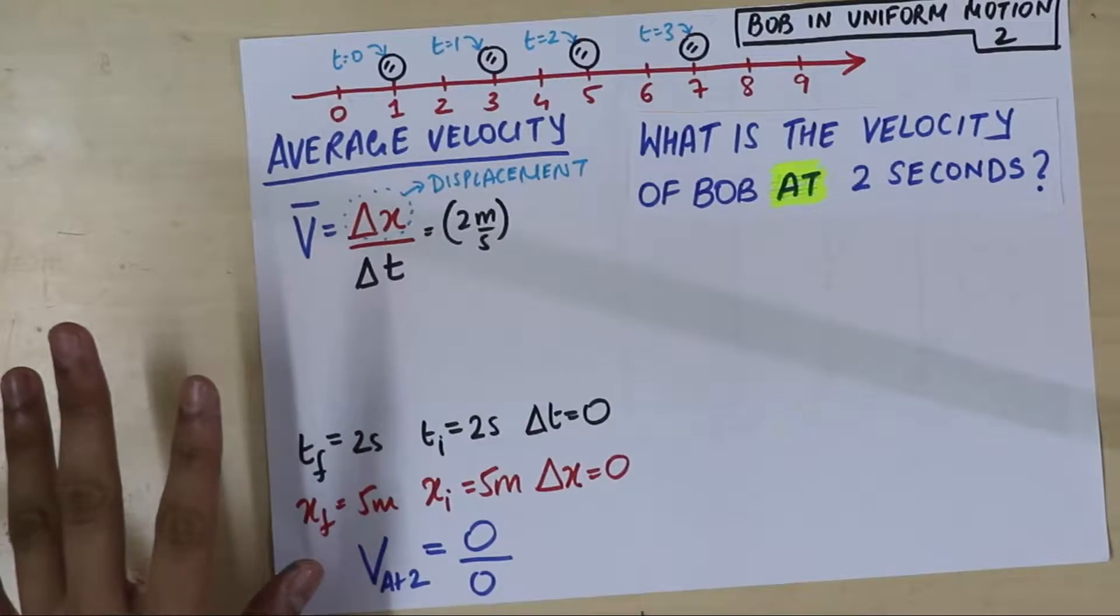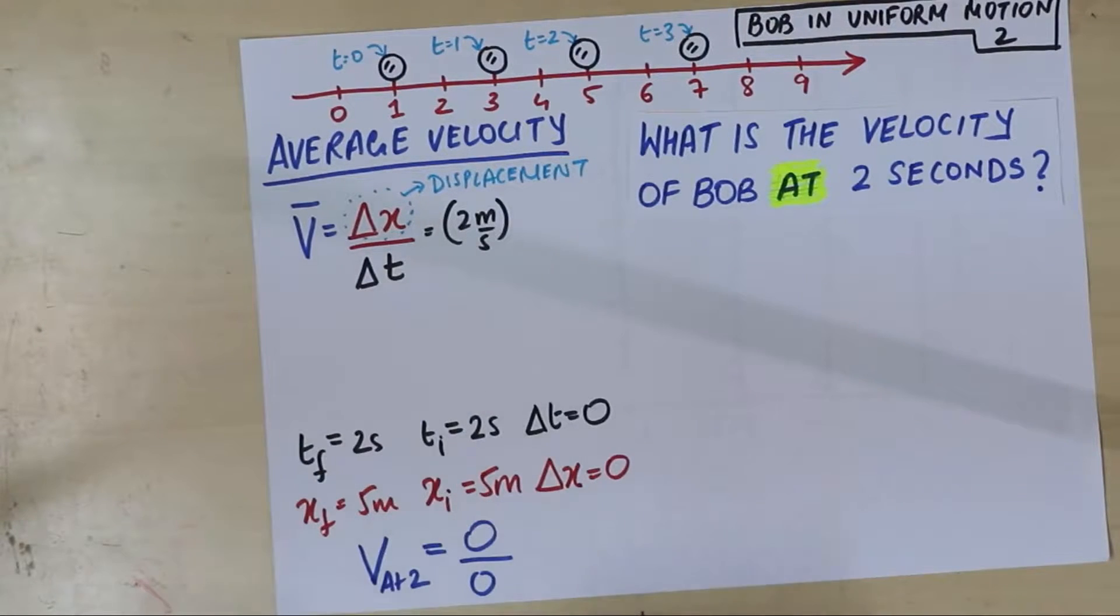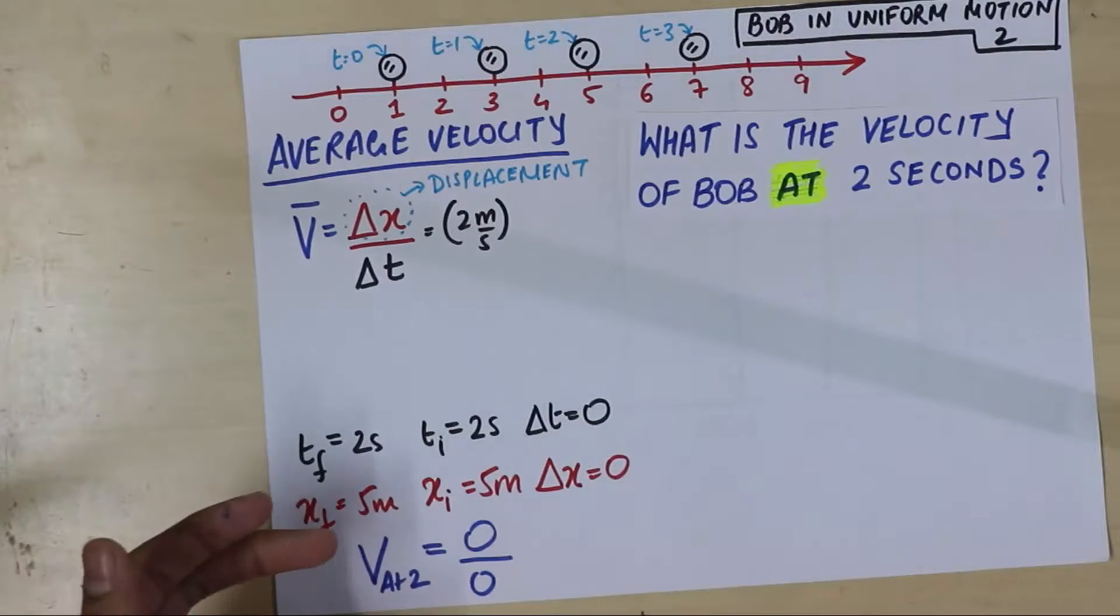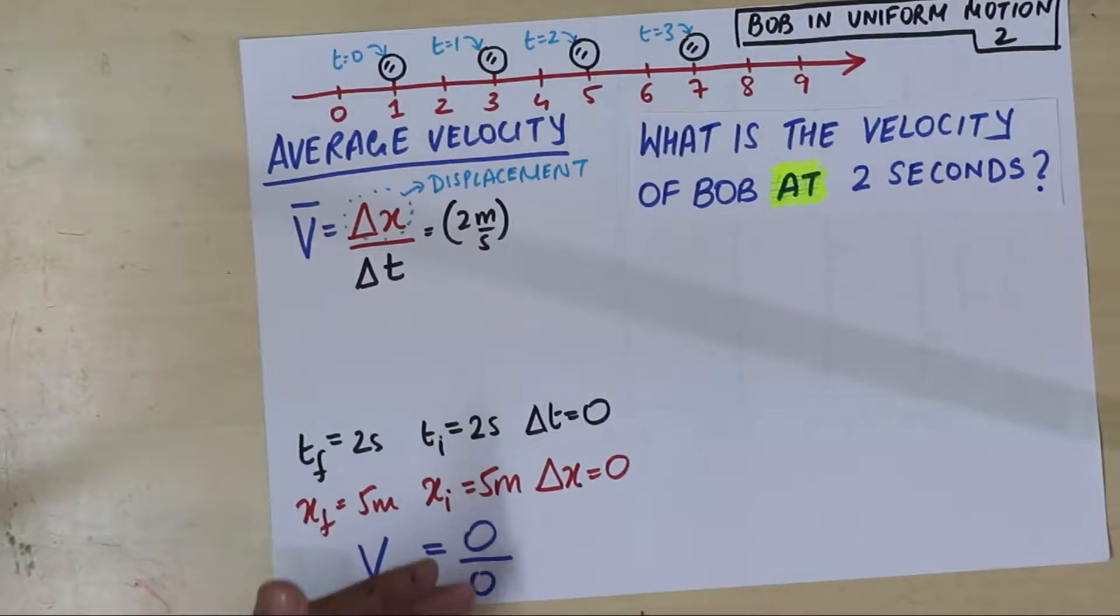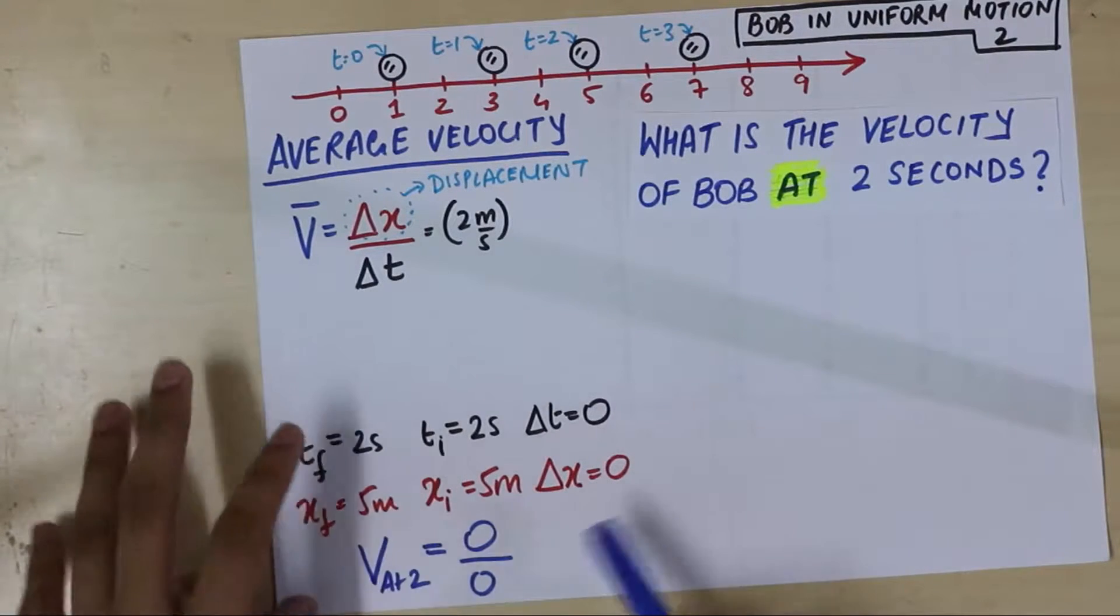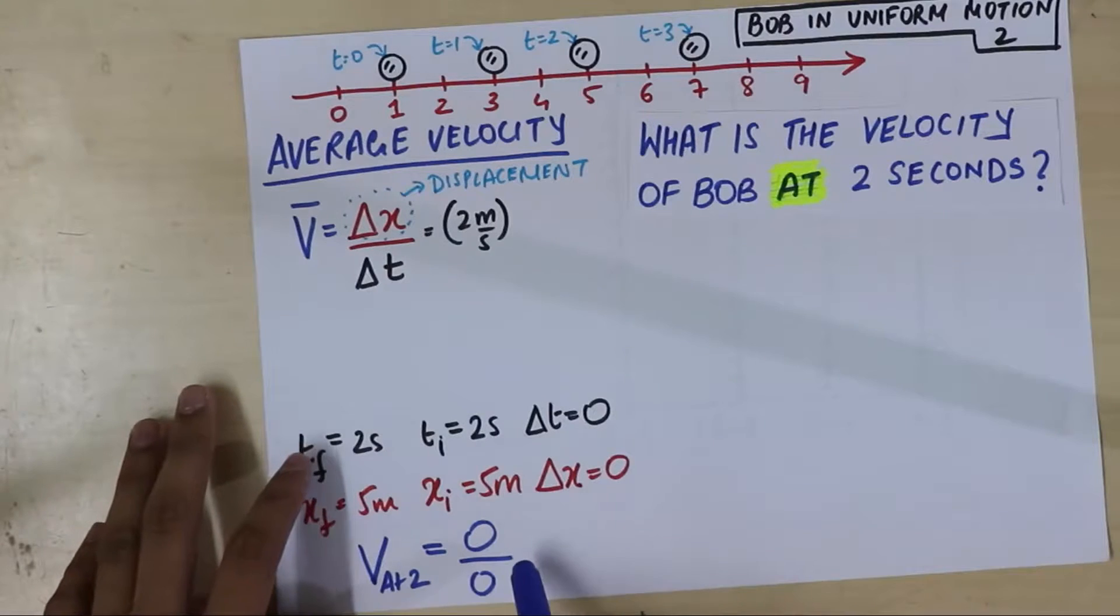Mathematicians call 0 by 0 as an undefined value. Well, that's what mathematicians say. You can also plug this in your calculator and you will see an error. But, what we physicists say is that whenever you reach a 0 by 0 any moment in your life, it just means that your approach to that problem was wrong. That's all.